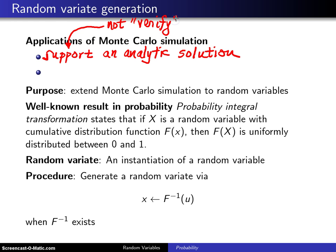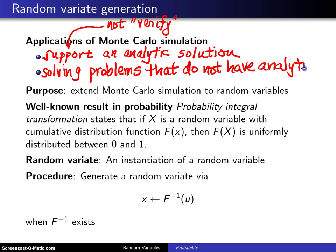it just gives you a lot more confidence that your analytic solution is right. The second reason Monte Carlo shows up is it can be used for solving problems that do not have analytic solutions. Some of these probability problems, if you just tweak them a little bit, they get so difficult that you can't solve them analytically anymore and Monte Carlo comes to the rescue.